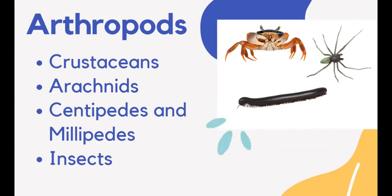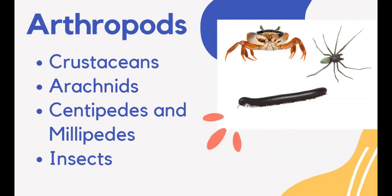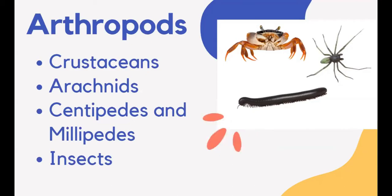Scorpions, spiders, ticks, and mites are called arachnids. Their body is divided into two segments: a cephalothorax and an abdomen. A cephalothorax is the head and thorax fused together. They usually have eight legs and no antennae. Many arachnids use silk either to catch prey or help them reproduce. Centipedes and millipedes have long bodies composed of many segments. Each segment of a centipede has one pair of legs, and centipedes have poison claws behind the head to paralyze their prey. Millipedes live in moist areas, feed on decaying vegetable matter, and protect themselves by rolling into tight coils.